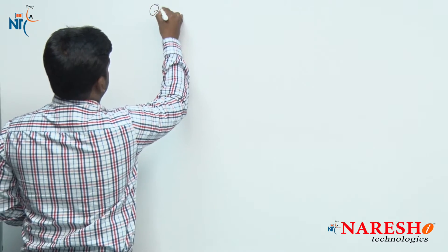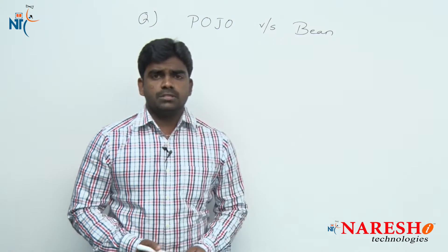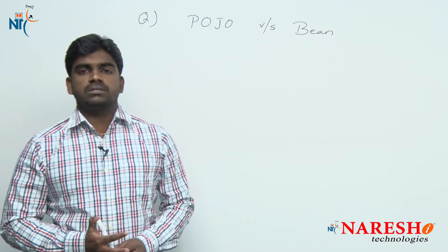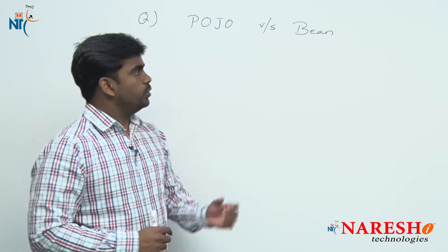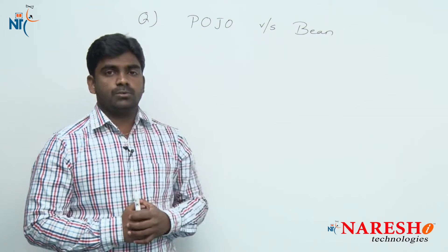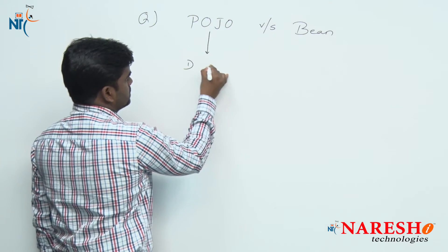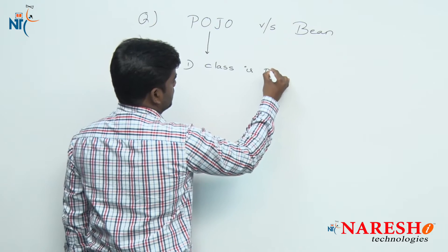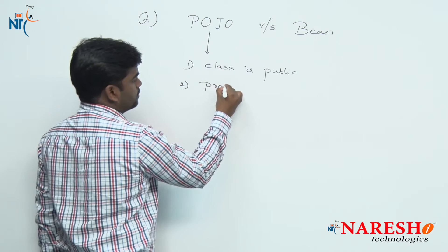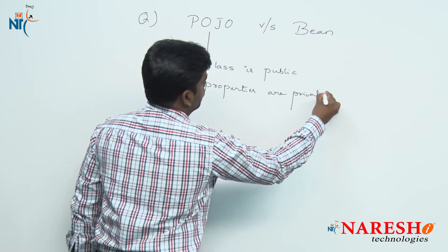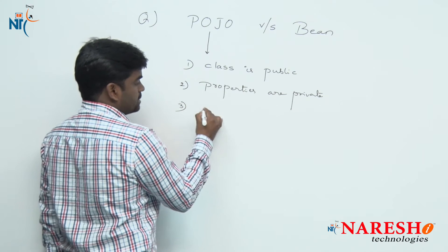The question is POJO versus Bean class. There is only one difference. We know all the POJO rules. What are the POJO rules? The class must be public, and the properties must be private. Properties means the variables we have seen already — properties are private.